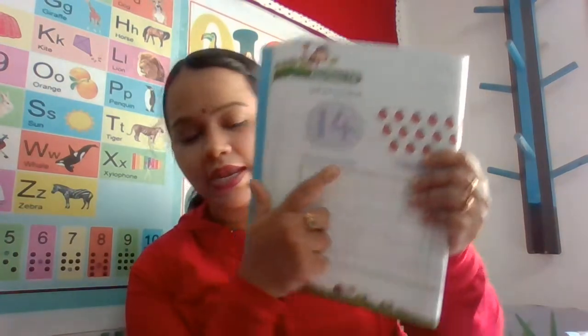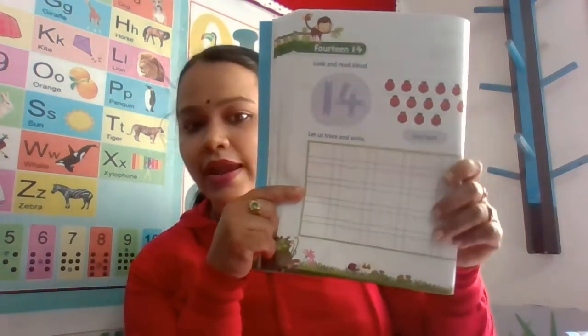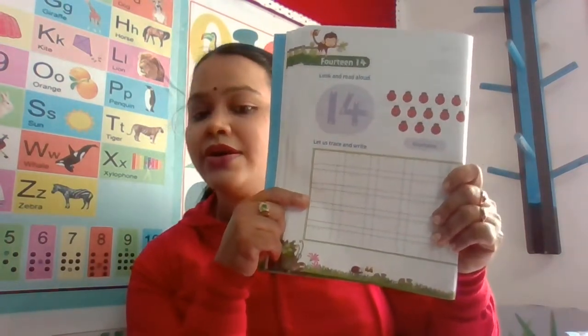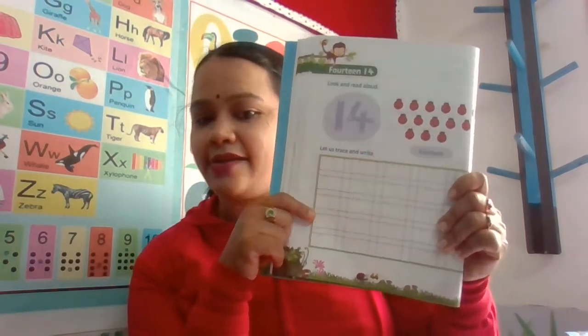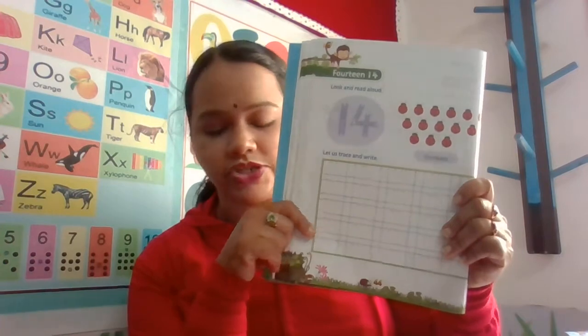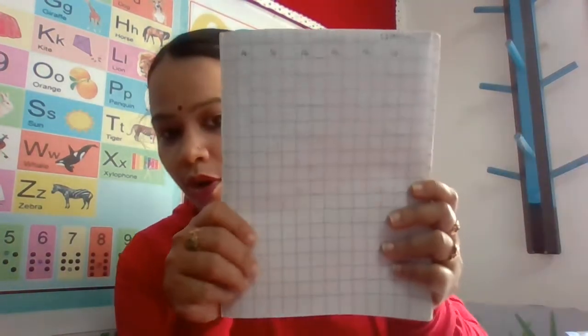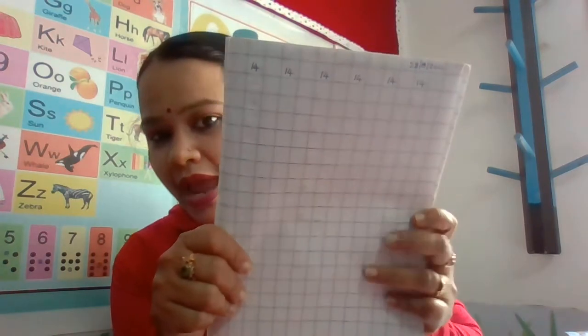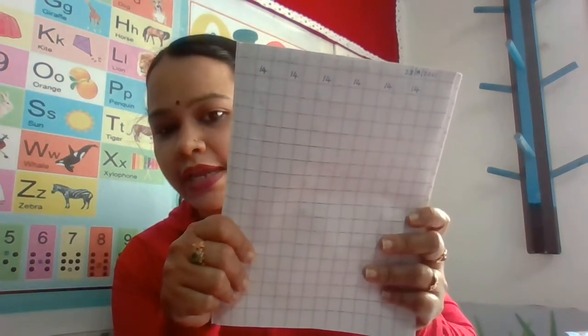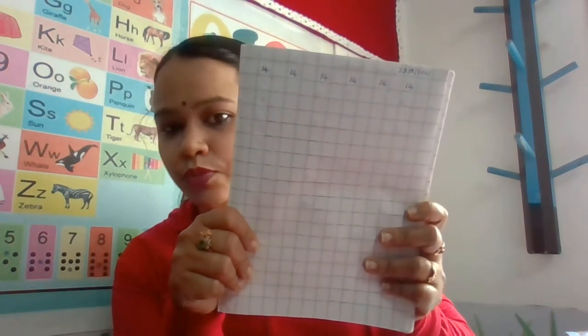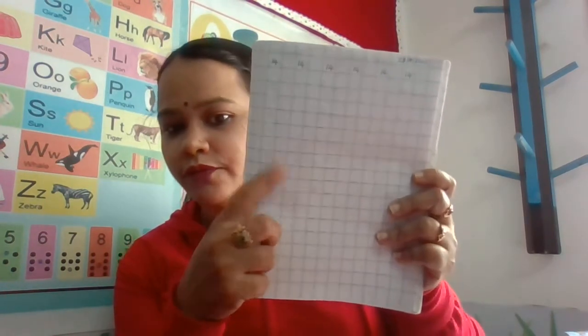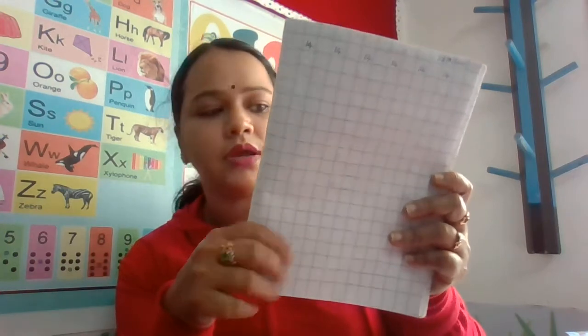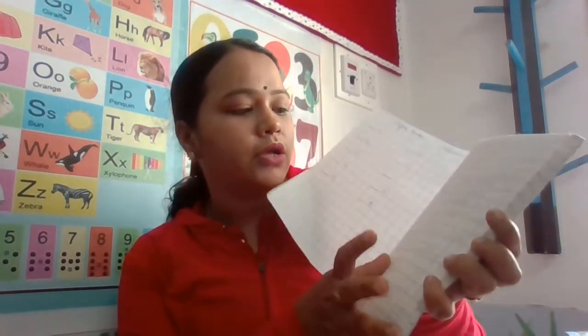Please write today's date. While writing you have to say and write. Okay children. After writing in this book, you have to take out your box book and write number 14 in your box book — one full page.